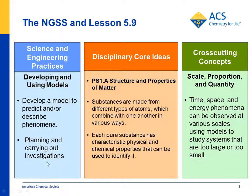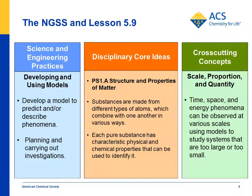Students also plan and carry out an investigation showing that substances are made from different types of atoms which combine in various ways, and that substances have characteristic physical and chemical properties. Here, students see that different substances dissolve in water in a characteristic way — either endothermically or exothermically — and that the degree of temperature change differs depending on the substance. For cross-cutting concepts of scale, proportion, and quantity, students look at the submicroscopic level — at atoms and molecules — and use the interaction between water molecules and different solutes to explain their macroscopic observations of temperature change, looking at things on different scales to understand them better.